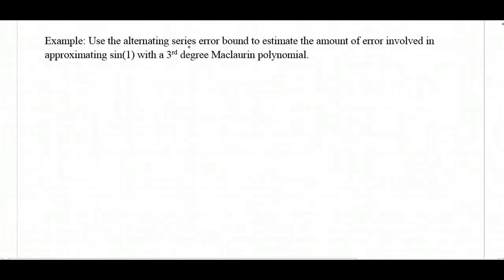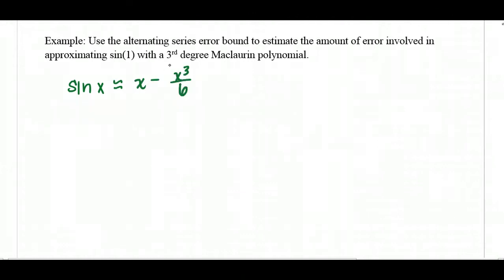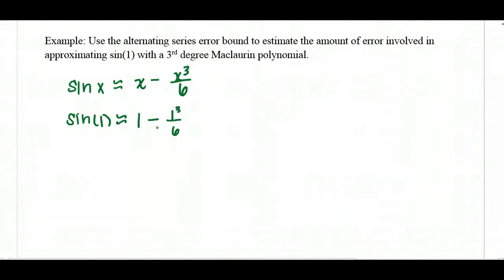For another example, use the alternating series error bound to estimate the error in approximating sine of 1 with a third degree Maclaurin polynomial. The sine function's Maclaurin polynomial is approximately x minus x cubed over 3 factorial, which is 6 — that's the third degree Maclaurin polynomial. So sine of 1 is approximately 1 minus 1 cubed over 6, which equals 1 minus 1 sixth, or 5 over 6.